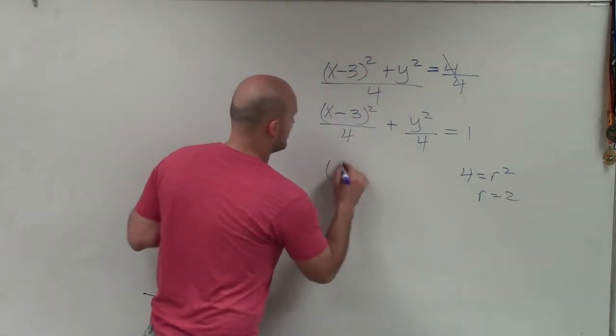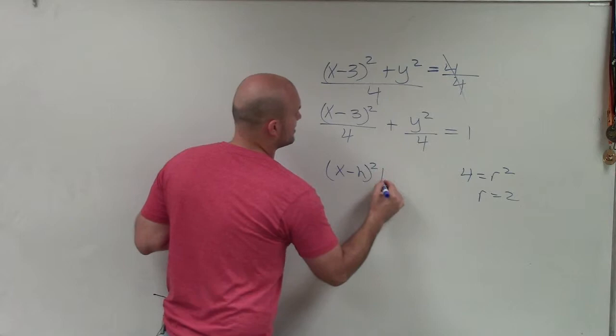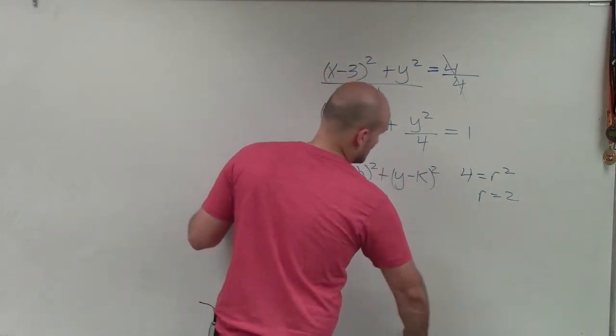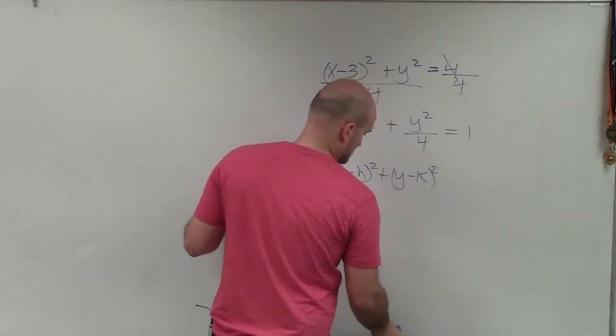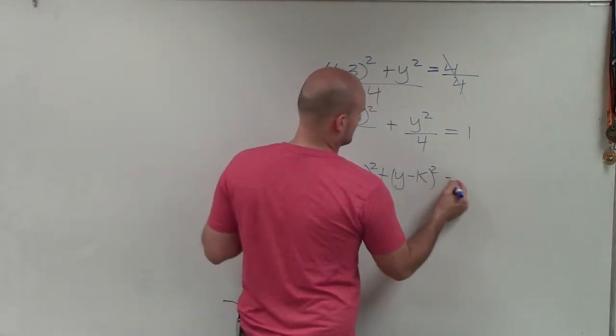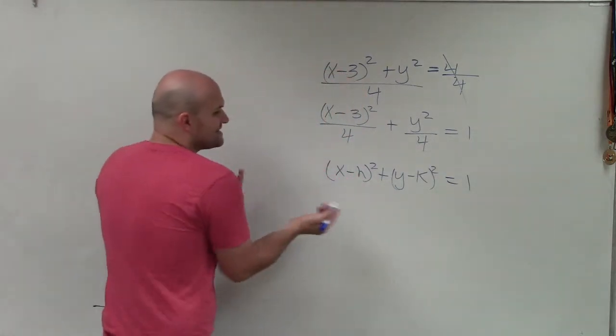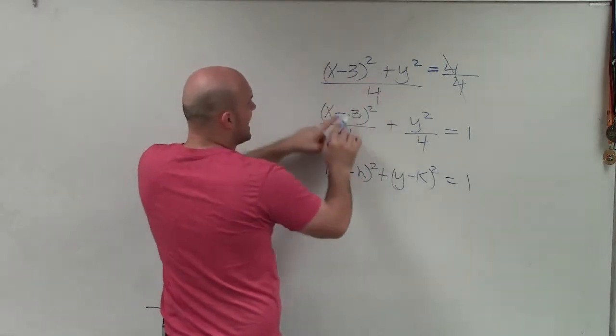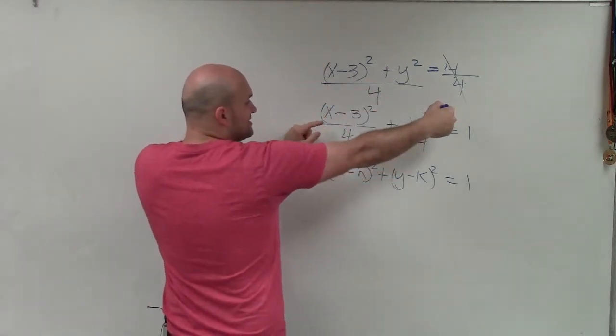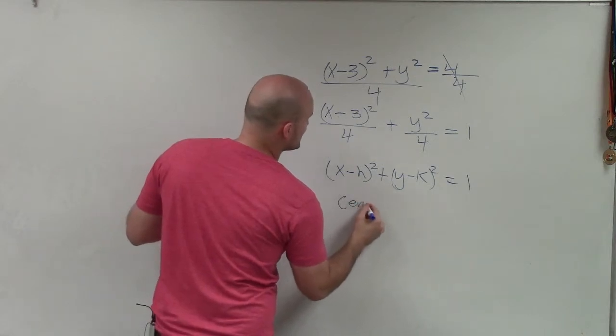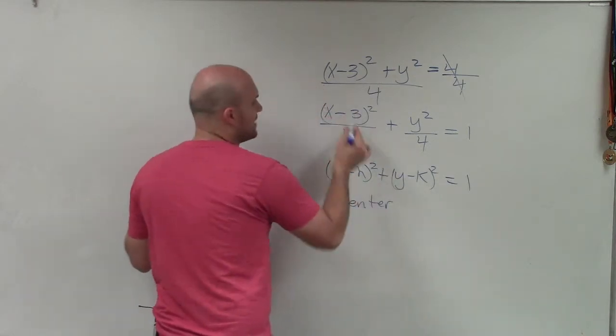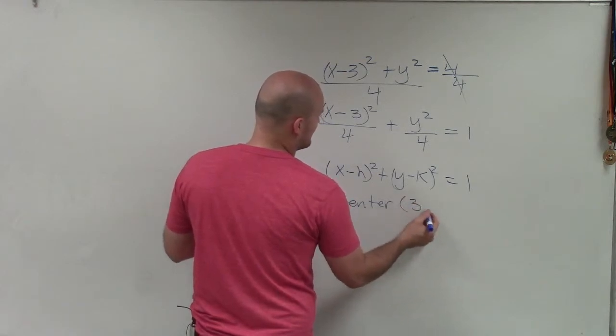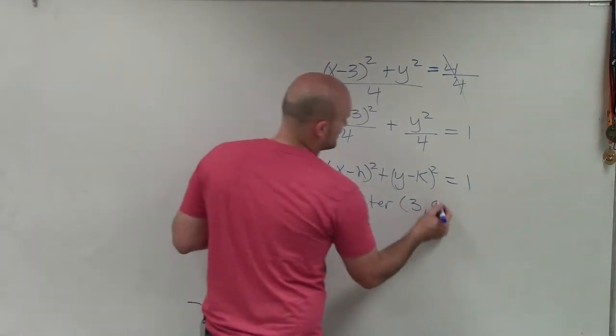However, this form, x minus h squared plus y minus k squared equals 1, that is still going to remain the same. So we can now determine our center is still going to be opposite of h, opposite of k. You can see there's no k, so that's going to be 0. So my center is going to be opposite of 3. So that's going to be positive 3 and positive 3, 0. So I'm going to go and plot this.